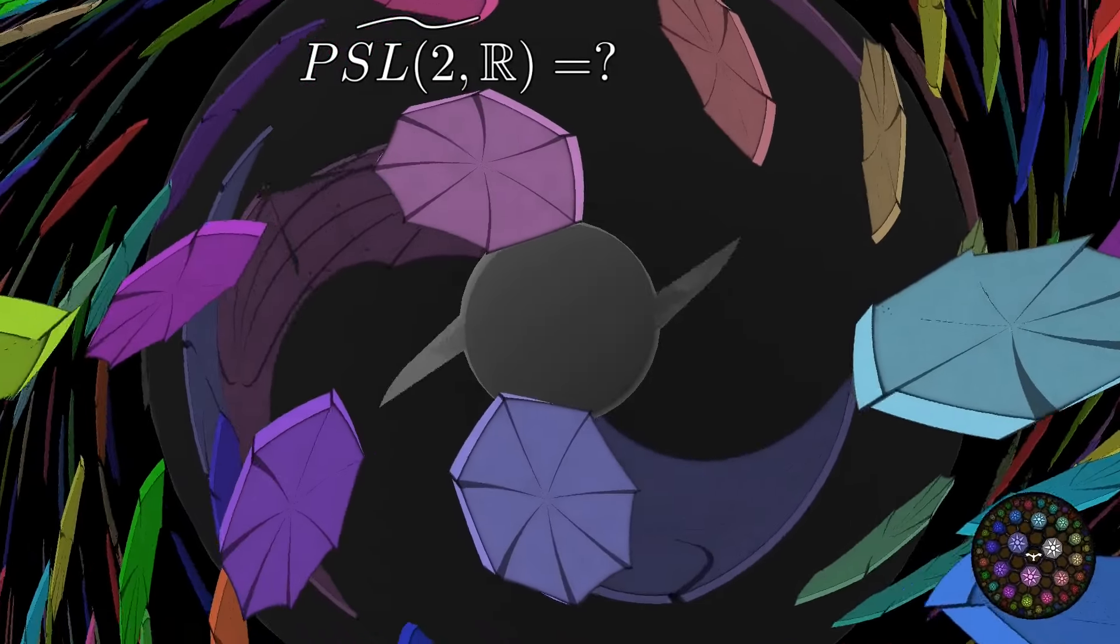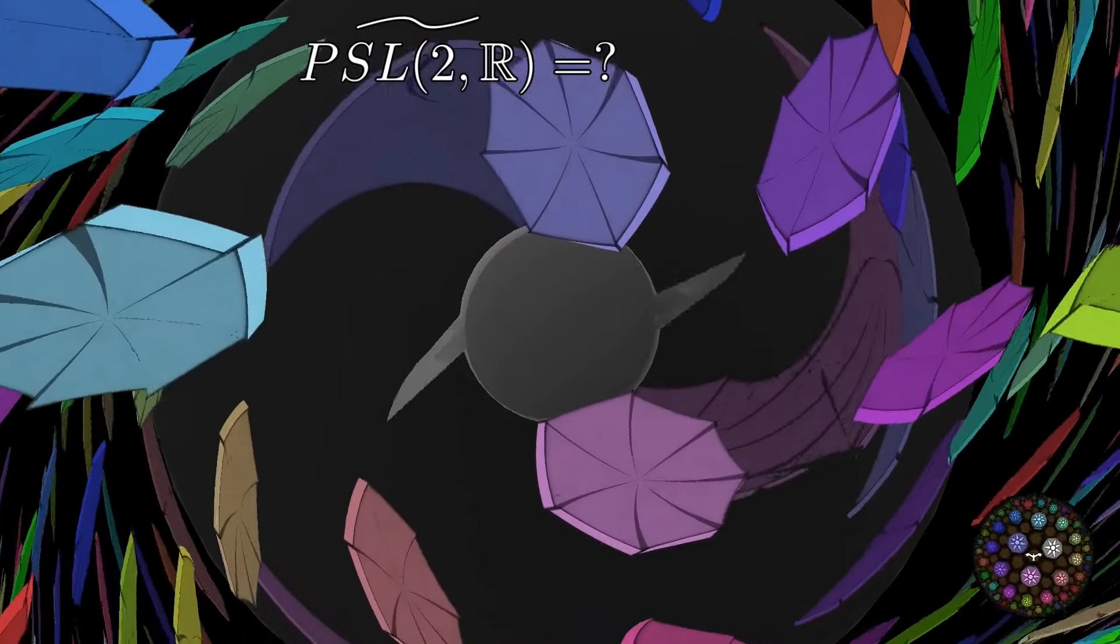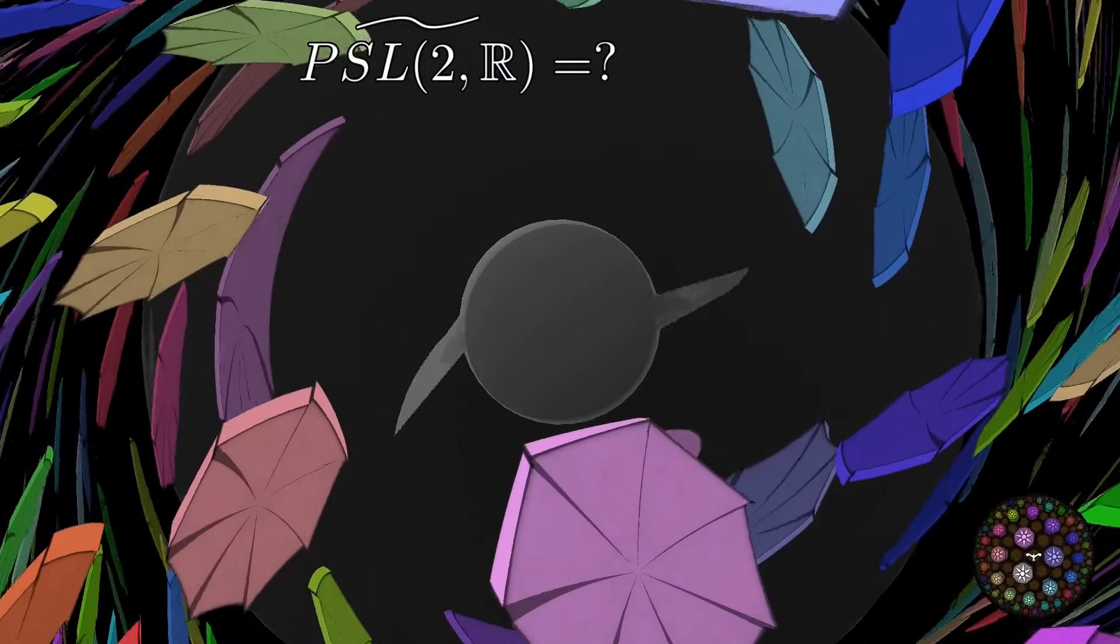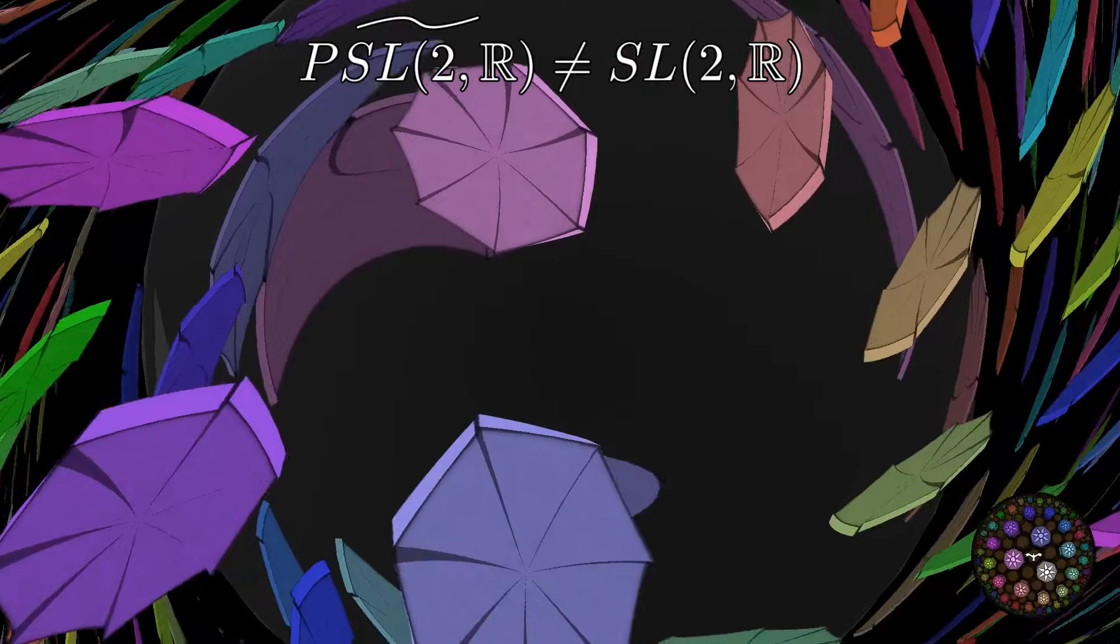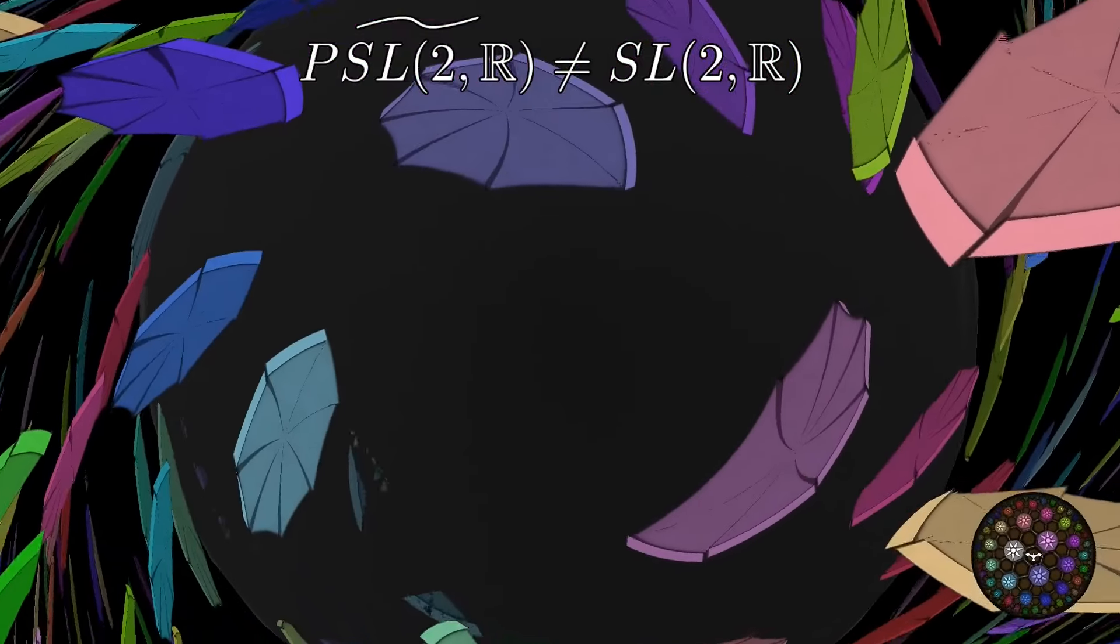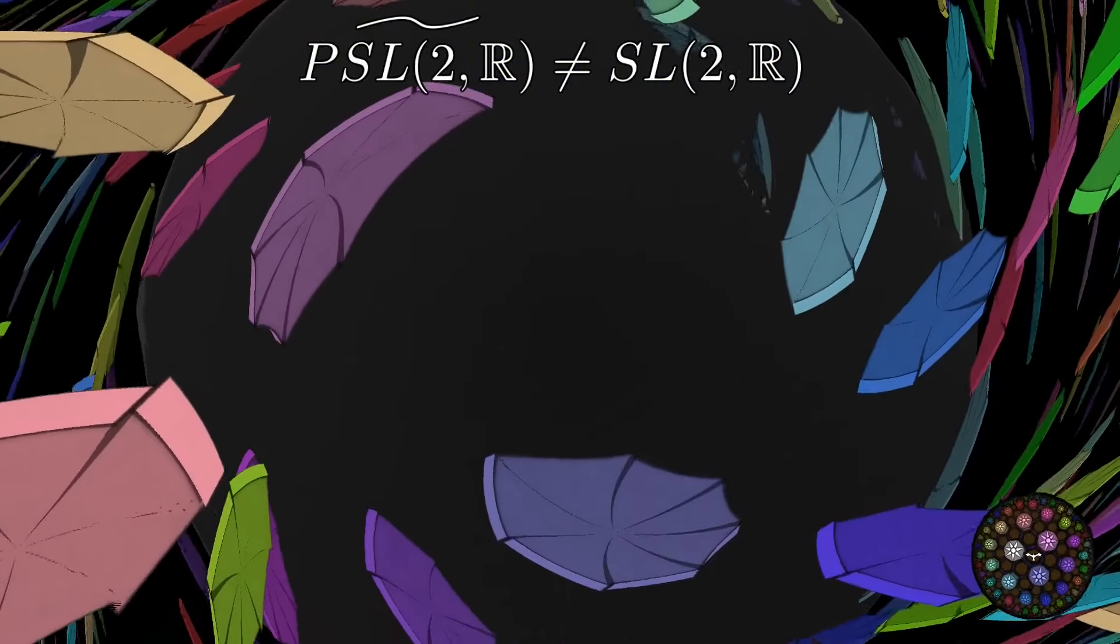The motion space of H² is PSL(2,R). What is the universal cover of PSL(2,R)? Is it SL(2,R)? Unfortunately, no. SL(2,R) is a covering space of PSL(2,R), but it is again a double cover.